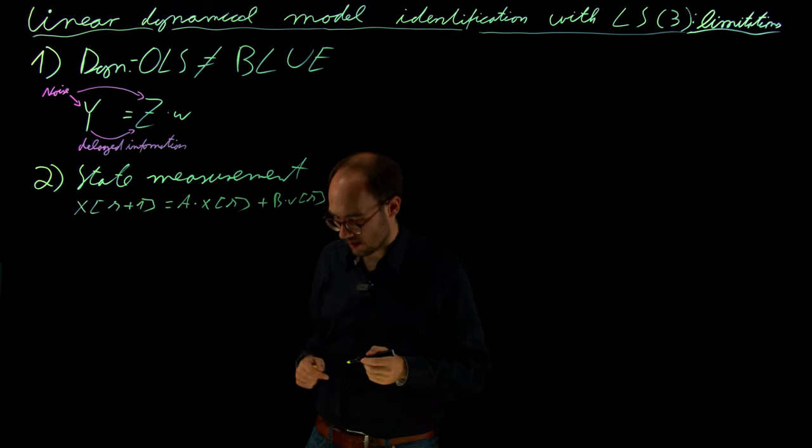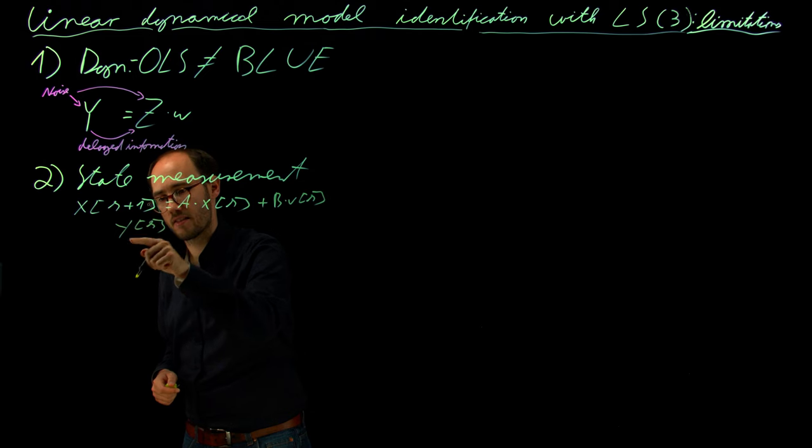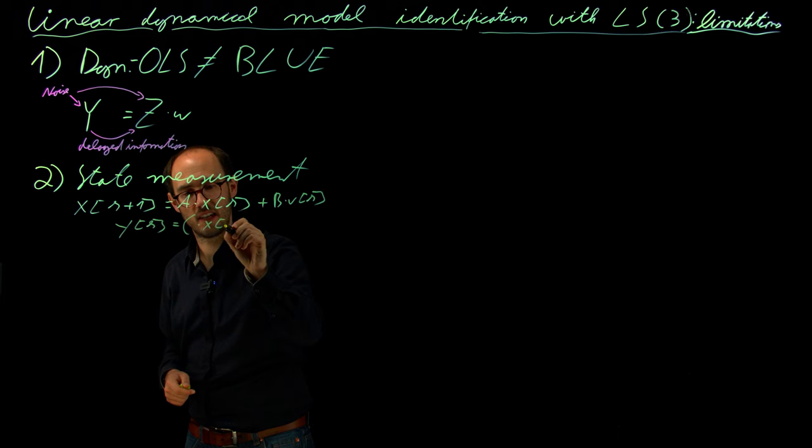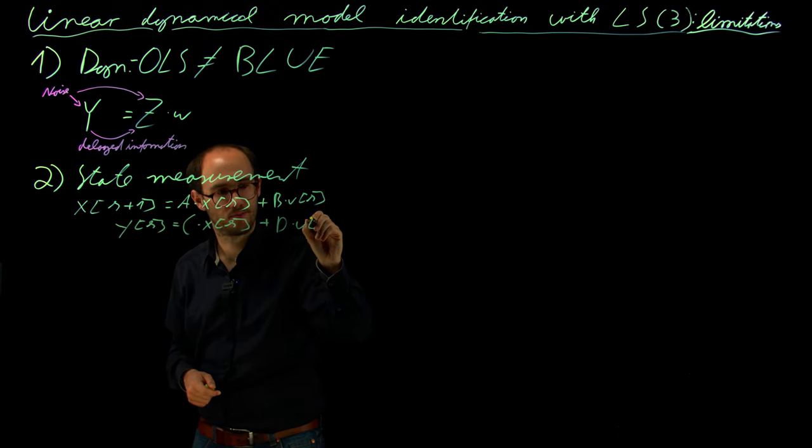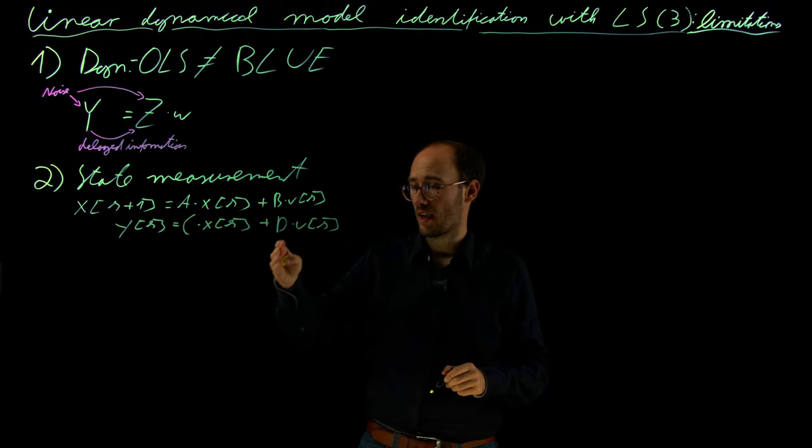However, in reality, there is also a measurement equation which says y_k, the actual measurements, are some mapping of the states and the inputs with additional parameters in C and additional parameters in D.